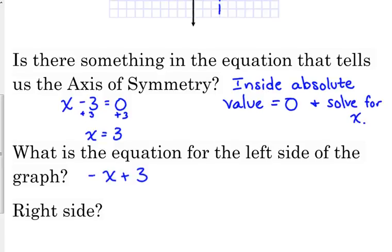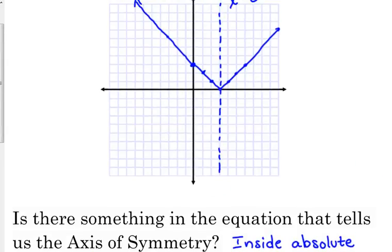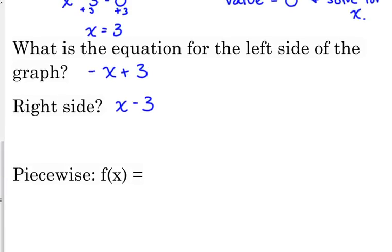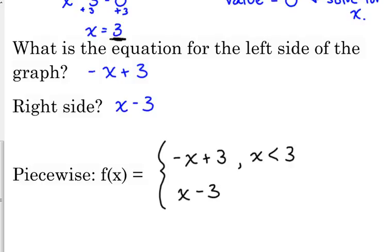The right side is a little trickier. The slope is easy — positive 1. If you extend it to cross the y-axis, the y-intercept would be negative 3, giving x minus 3 as our right side. So negative x plus 3 and positive x minus 3 — the signs are just opposite. Written as a piecewise, we always do the left side first: negative x plus 3 when x is less than 3, and x minus 3 when x is greater than or equal to 3.